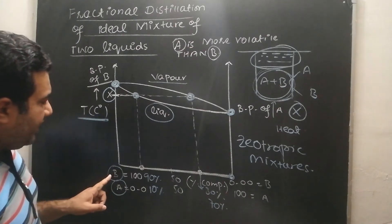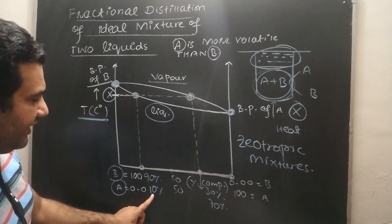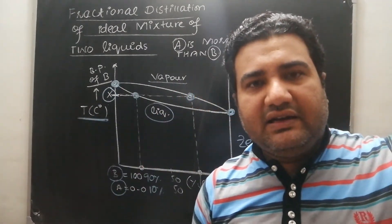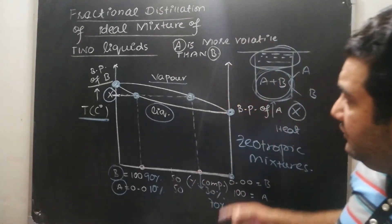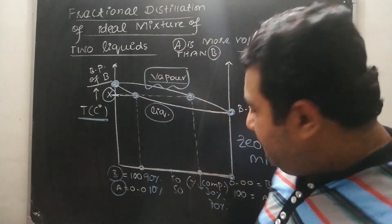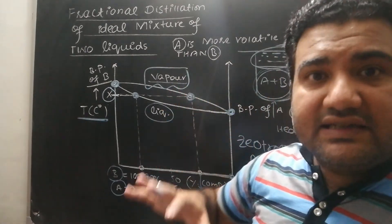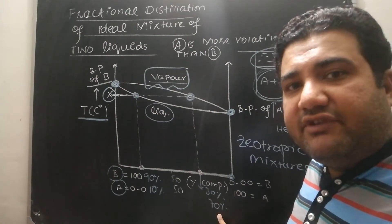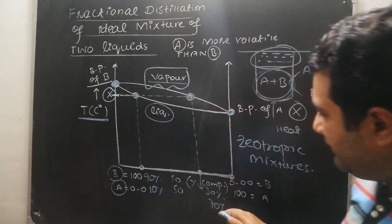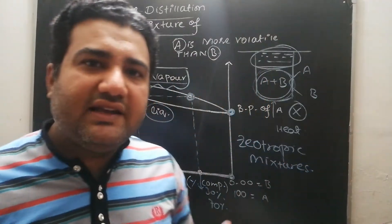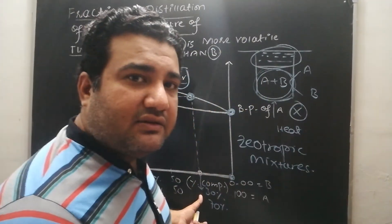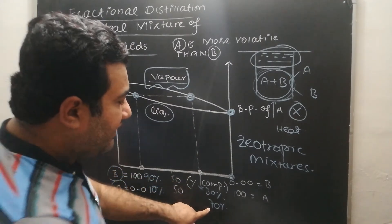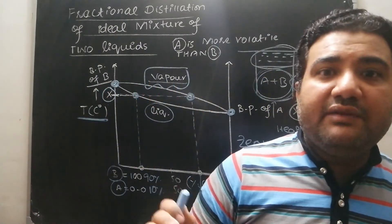The liquid has a higher quantity of B and lower quantity of A, but the vapors have a high quantity of A and low quantity of B. Most of A has moved to the vapor state, while most of B remains in the liquid state. When you condense those vapors — which have 30% B and 70% A — and redistill that liquid, the new vapor state will have even less B and even more A: approximately 90% A and 10% B.